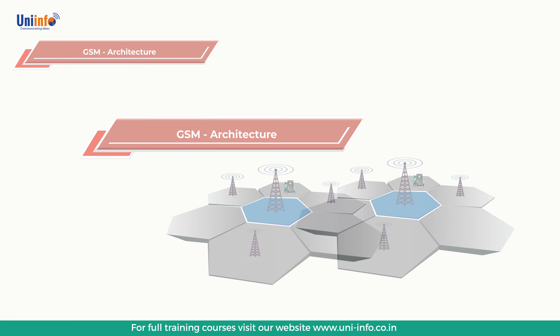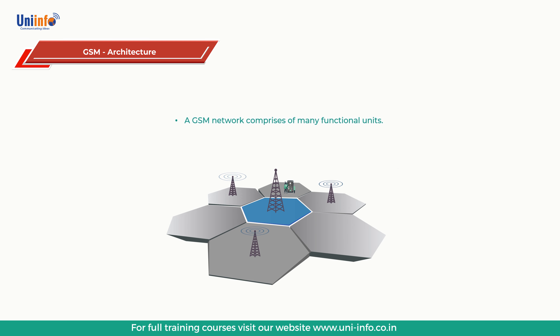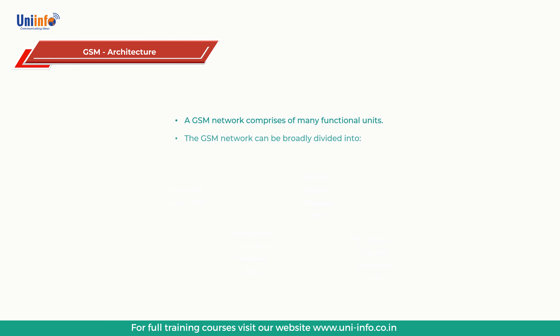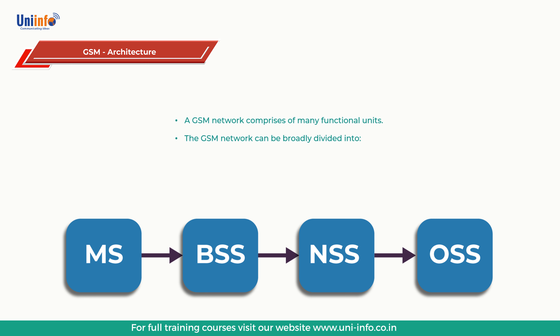A GSM network comprises many functional units. These functions and interfaces are explained in this chapter. The GSM network can be broadly divided into the mobile station, the base station subsystem, the network switching subsystem, and the operation support subsystem.